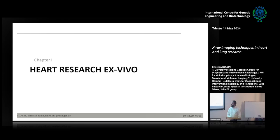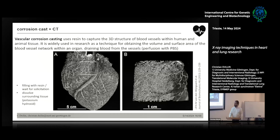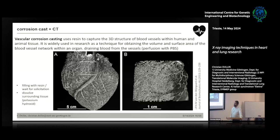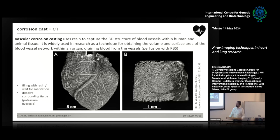For heart research ex vivo, the very old-school approach is vascular casting. You inject casting agent into the vessels; it usually has slightly higher x-ray attenuation. You can dissolve the surrounding tissue or keep it and do x-ray imaging to get a mechanical cast of the heart in 3D. Casting is an old technique but requires skill: you need to flush the vessels first to avoid blood clots, then inject with a decent amount of pressure because the resin gets very sticky. Too much pressure and you break the vessels; too little and you don't reach the finest vessel generations.